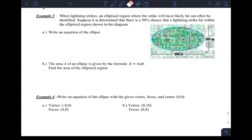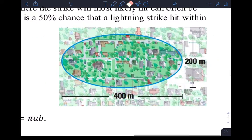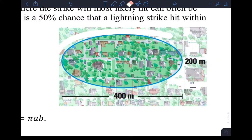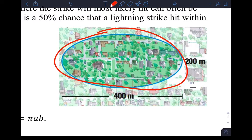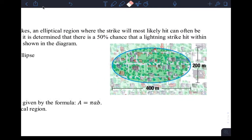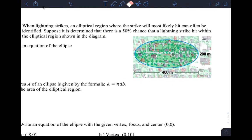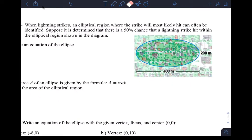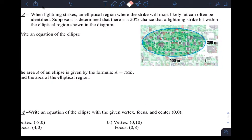Okay, so example 3 says, when lightning strikes an elliptical region where the strike will most likely hit can often be identified. So that would be this region right here. This would be the elliptical region. And then suppose it's determined that there is a 50% chance that a lightning strike hit within an elliptical region shown in a diagram. Again, we're talking about this.